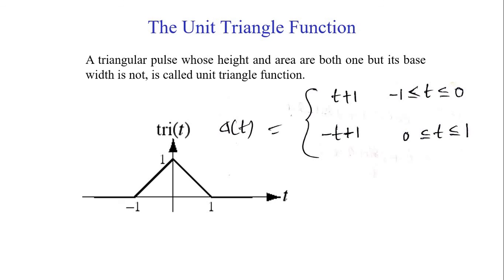The last signal is the unit triangular function. As the name suggests, the shape of the signal looks like a triangle, defined over the range −1 to 1. Between −1 and 0, the signal function is t+1; between 0 and 1, it is −t+1. Plotting these two line equations gives the triangular shape.